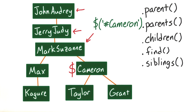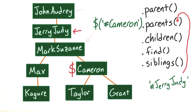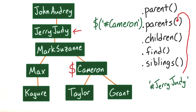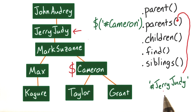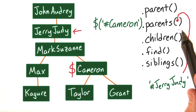I could use .parents to select my parents, my grandparents, and my great-grandparents. I could also filter for a specific parent by passing in another selector to the parents method. For instance, if I just wanted my grandparents Jerry and Judy, I could pass #Jerry, #Judy into parents and then only have that node selected.